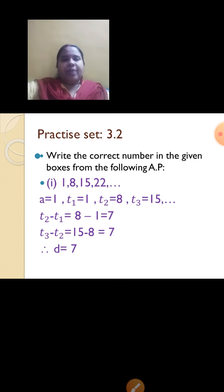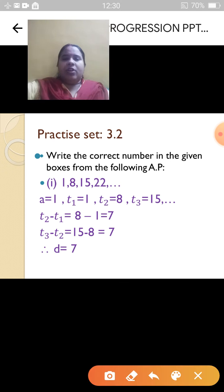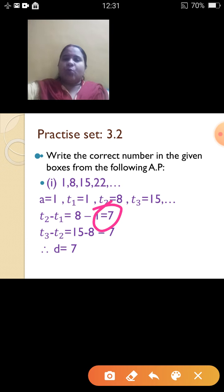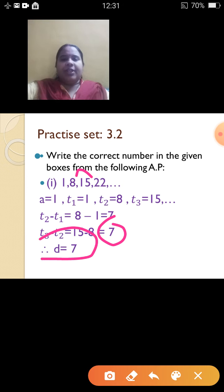Let us start with Practice Set 3.2, the first question — write the correct number in the given boxes. The AP given is 1, 8, 15, 22. So T1 is 1, T2 is 8, T3 is 15. T2 minus T1 is 8 minus 1, that is 7. T3 minus T2 is 15 minus 8, which is again 7. The common difference d is 7.